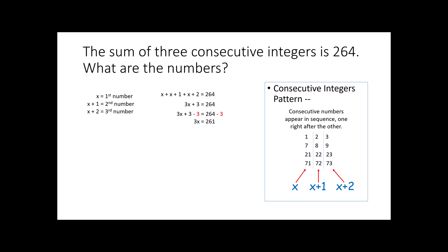Using the property of equality to get rid of the 3, then multiplying both sides by one-third to eliminate the coefficient, x ends up being 87. That's our first number. x plus 1 is 88, and x plus 2 is 89. These are the three consecutive integers that add up to 264. You can check: 87 plus 88 plus 89 is 264. Give your answer in a sentence.